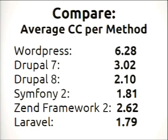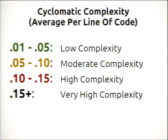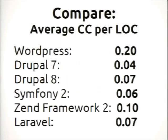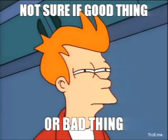The other way to analyze this is average complexity per line of code, which handles functional or mostly procedural codebases better. Low complexity is between 0.01 and 0.05 — meaning 1% to 5% of your lines of code are decision points. Running the same analysis, WordPress scores 0.2, and Drupal 7 now looks really good. This gives us a picture and raises questions, like why is Drupal 7 slightly better than Drupal 8 in this metric but significantly worse in the other.